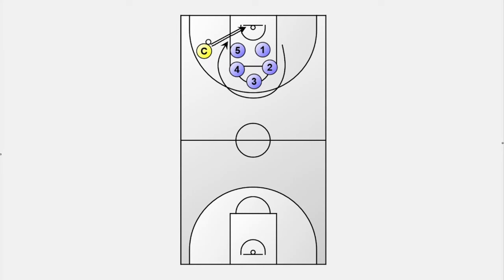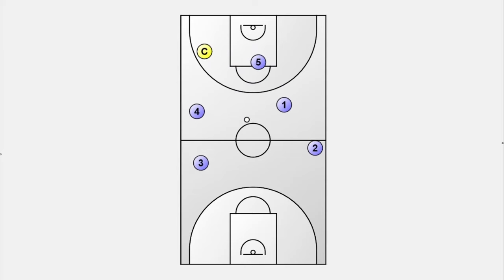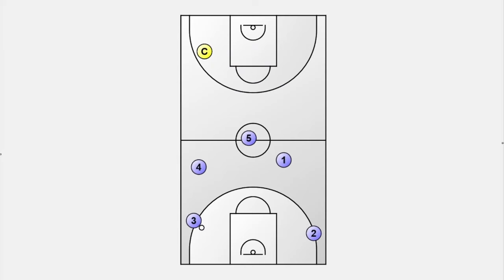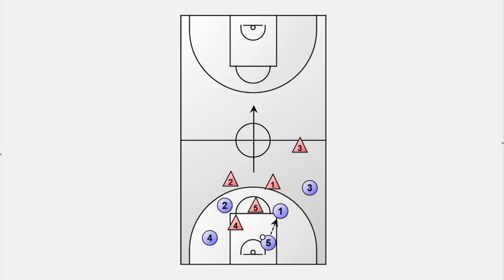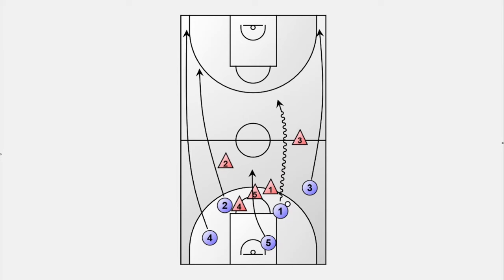A 5-on-0 drill can make sense to explain the basic concept and the positioning of your players. But it is best to move on to more game-like drills and add defense once your players have a good understanding and have automated the principles of your transition offense. Playing against defense is way more challenging. Intensity and pace of the drill will be higher.